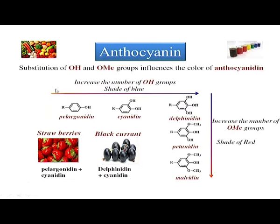Another class of compounds is anthocyanins, which also have extended conjugation and polyhydroxy functionalities, providing all those bright colors seen in berries and various fruits. Interestingly, if you have more hydroxy substituents the color shifts from red to blue, while more methoxy substitution shifts color from blue back to red. For example, pelargonidin and cyanidin give strawberries their red color, while delphinidin and cyanidin in black currants give a more blue hue.